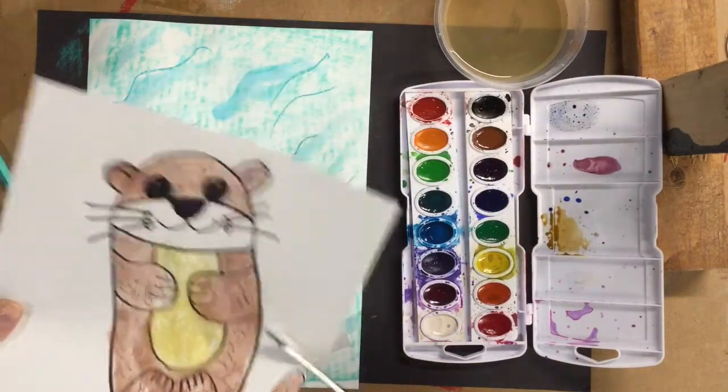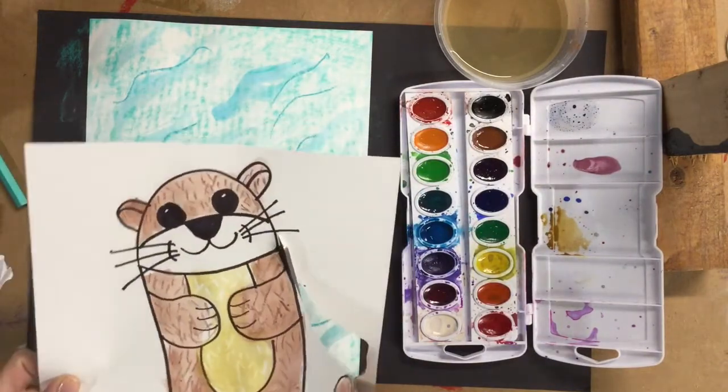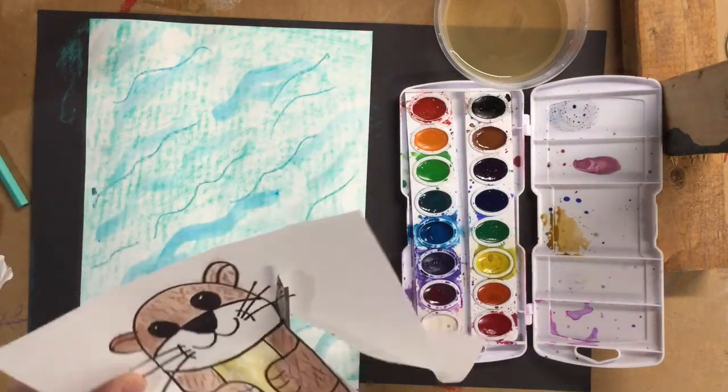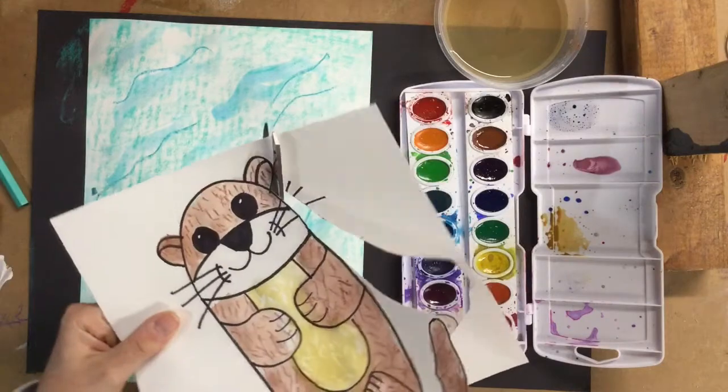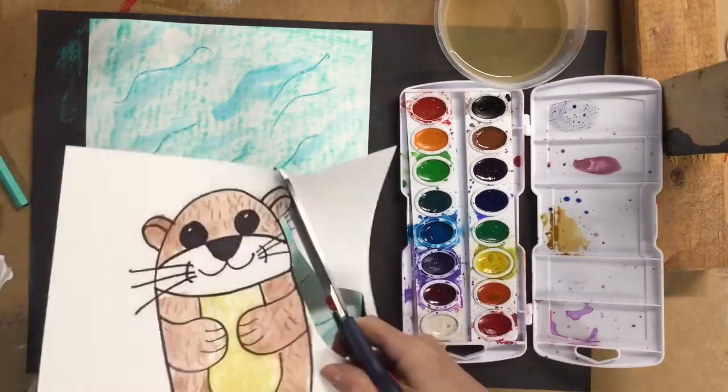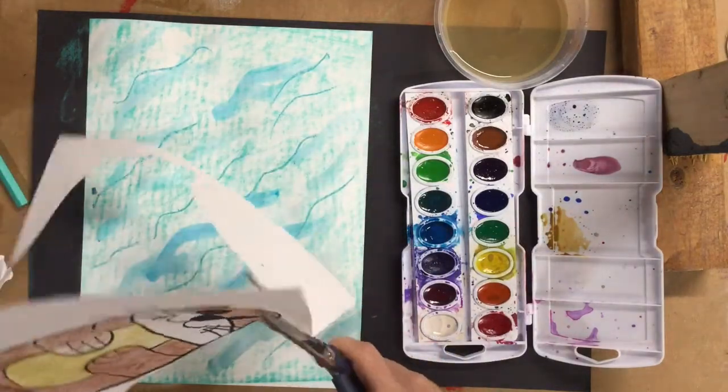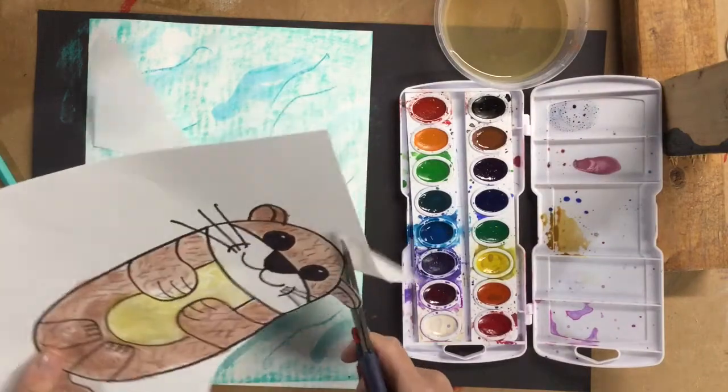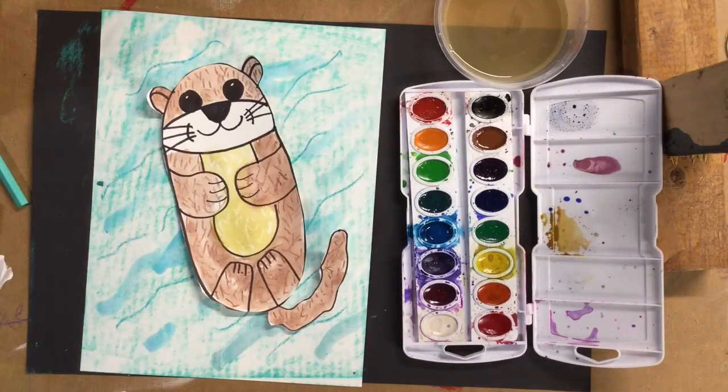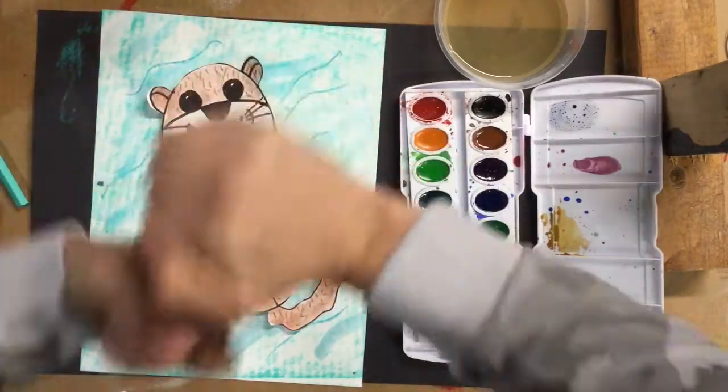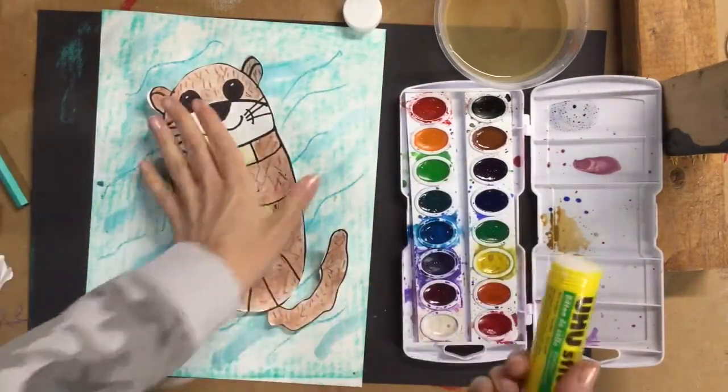Cut out your otter and glue it to your ocean background. Don't worry if you cut off the whiskers, we can just draw them on again. Use whatever glue you have at your house, glue stick or liquid Elmer's.